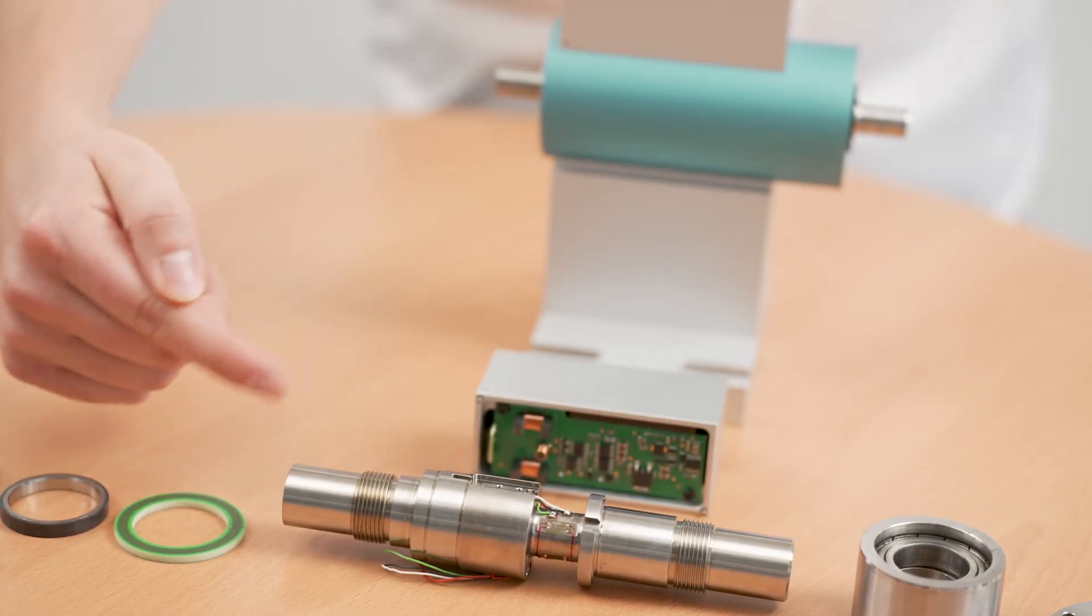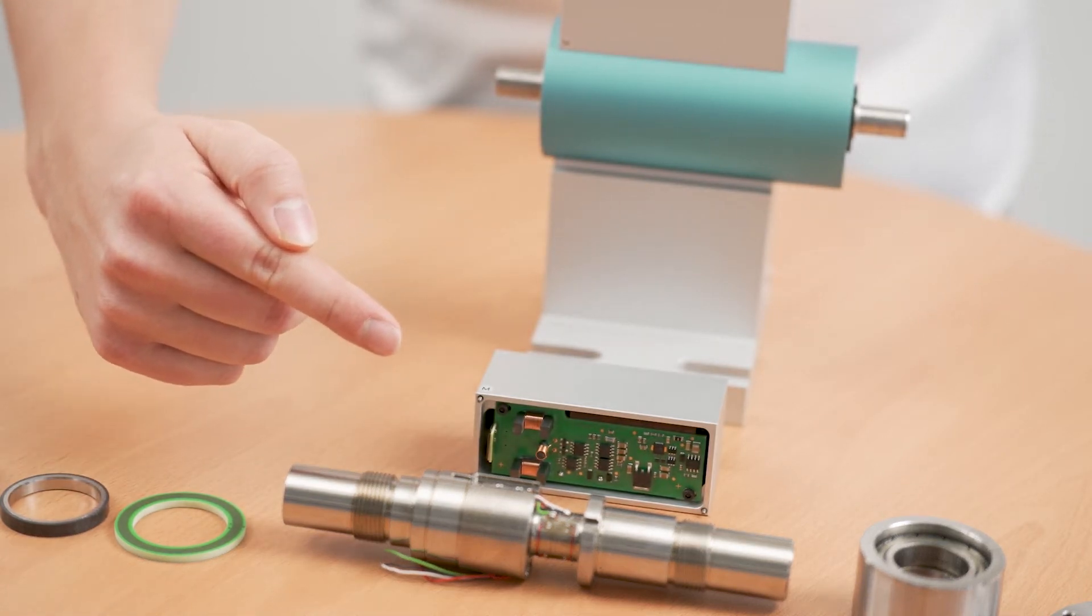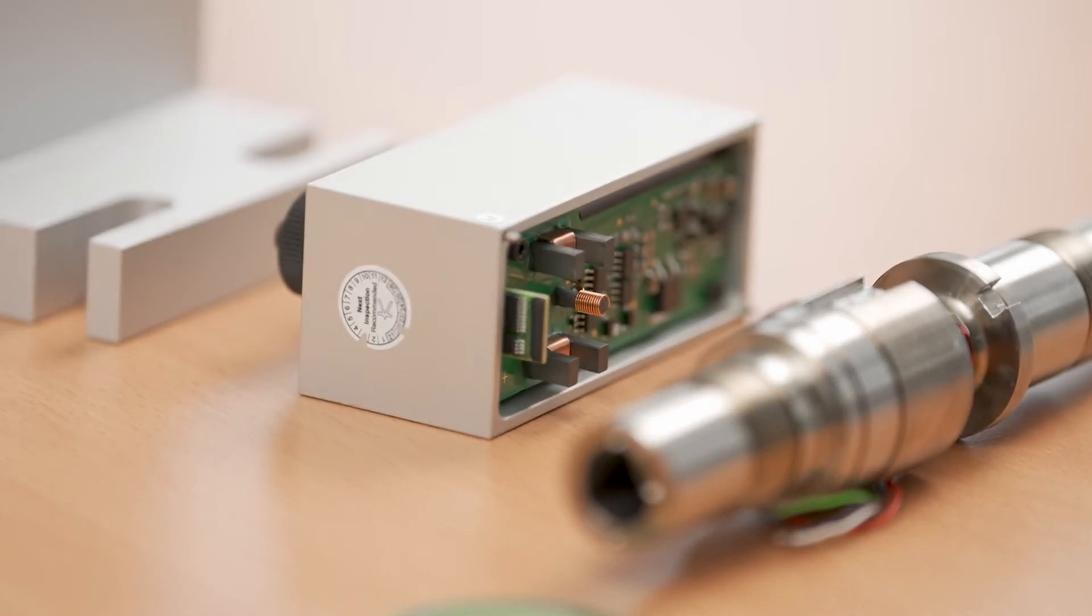As the measuring shaft rotates during the measurement, the power supply for the strain gauges and the electrical signals must be transmitted from the rotating shaft to the electronics.